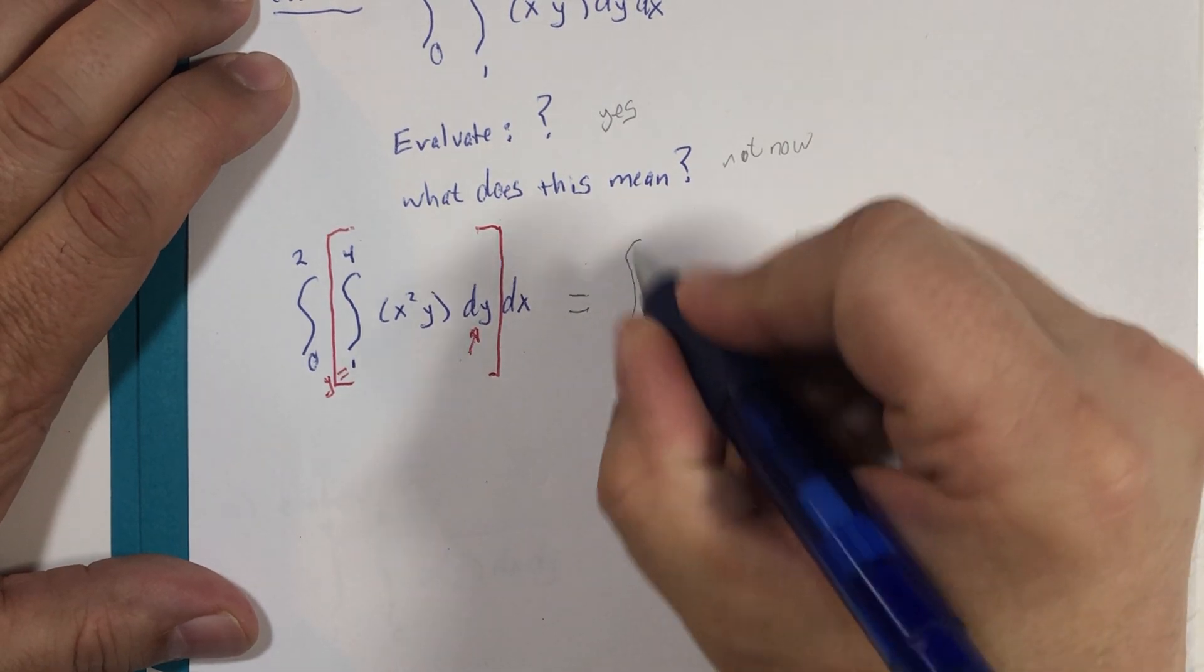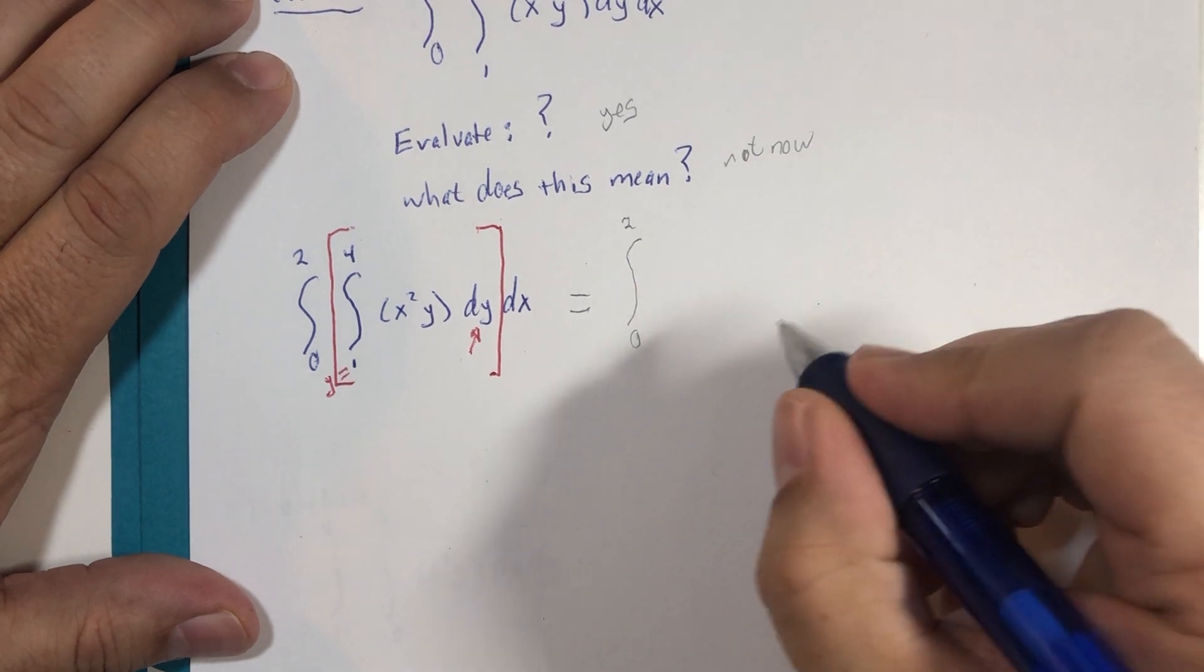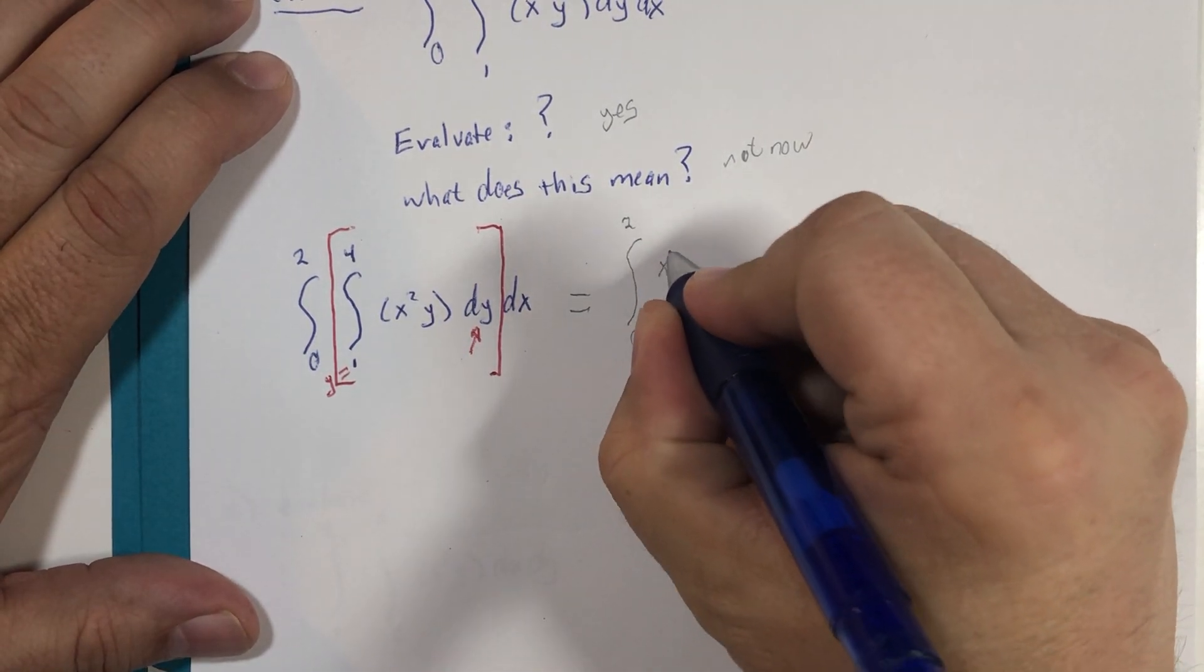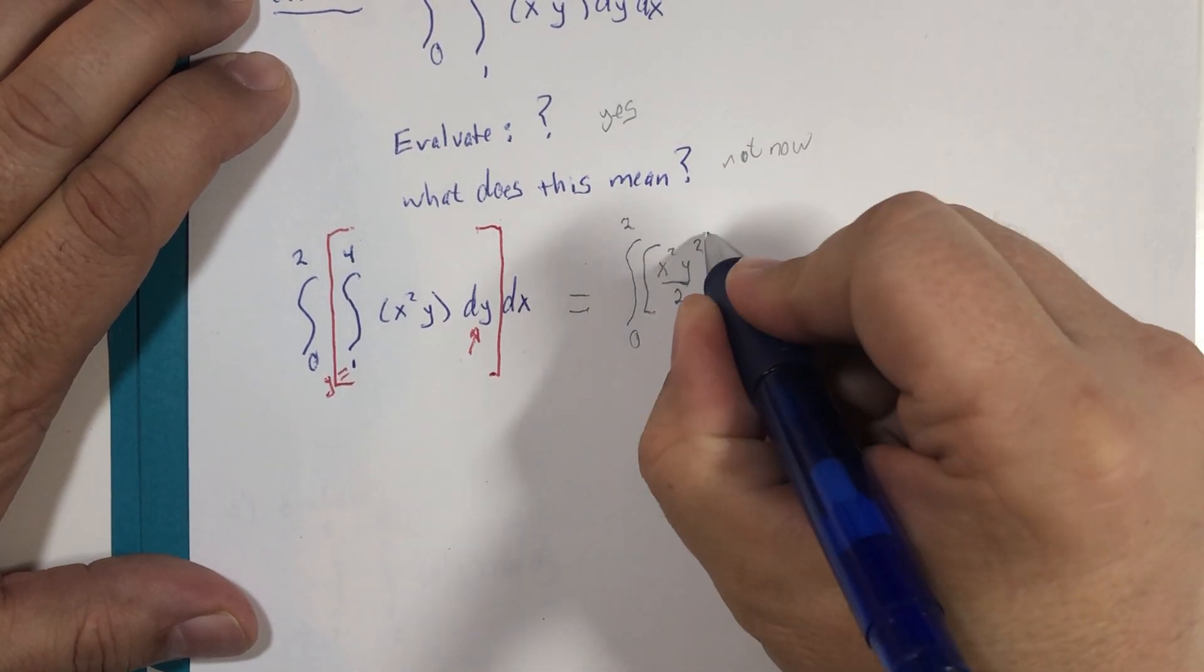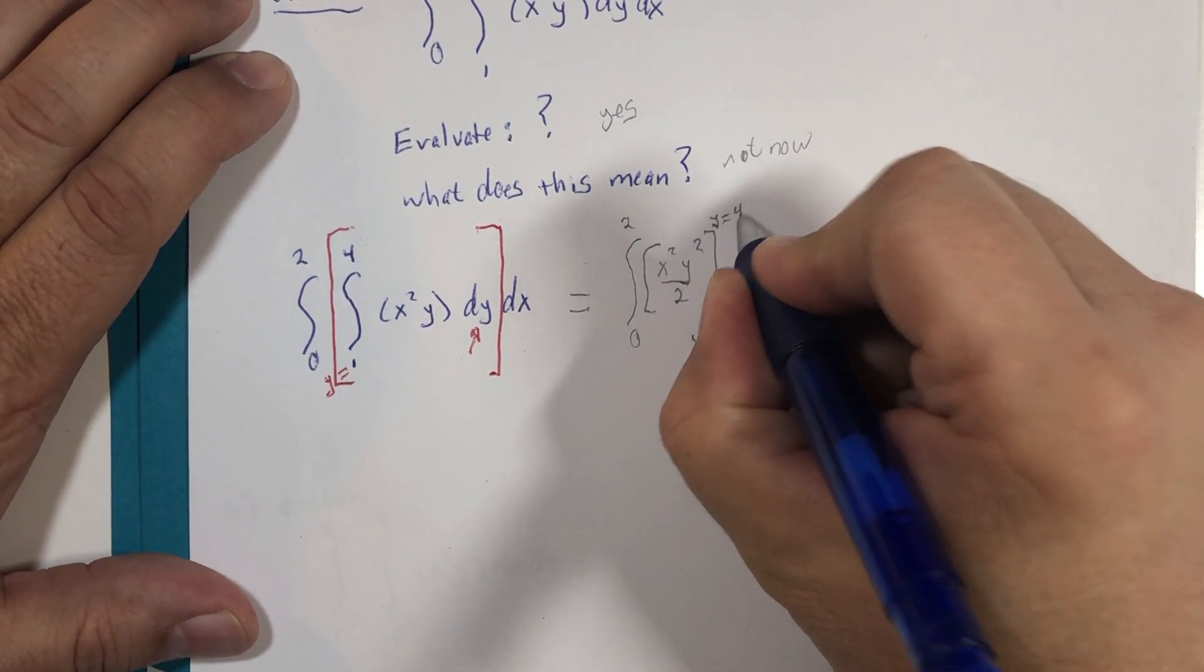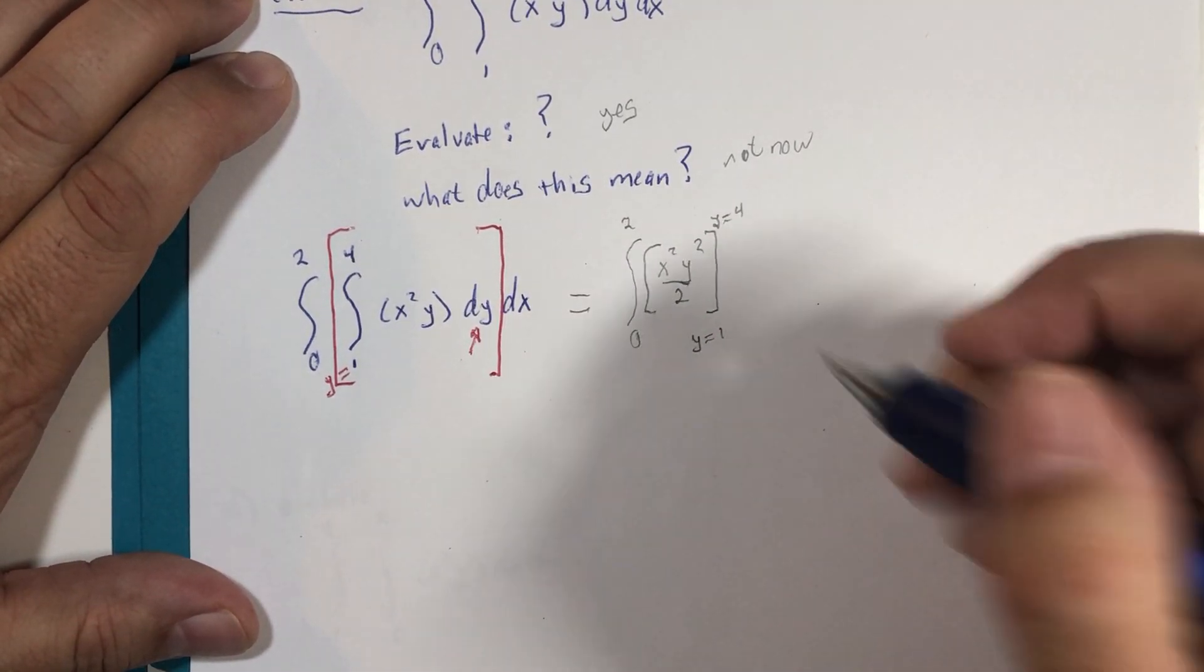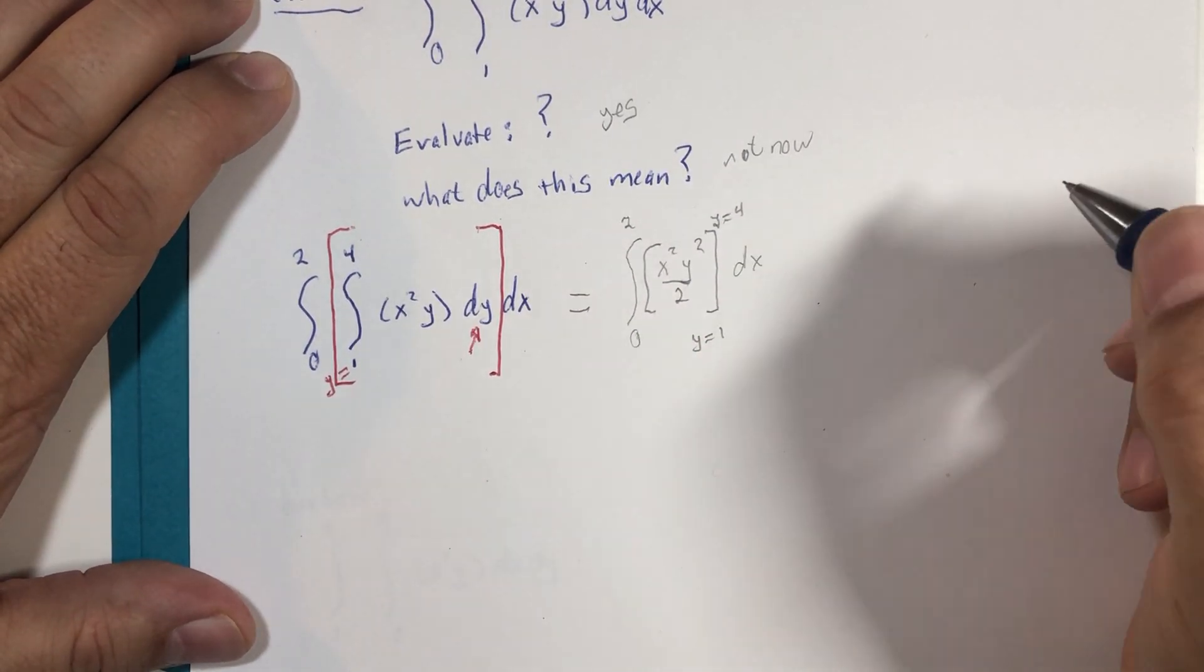So I'm going to ignore or hold off on the zero to two for a moment, and we'll put the dx in later. If y is the variable, this antiderivative is y squared divided by two. So you have x squared multiplied by y squared divided by two. And it's a definite integral where y is evaluated from one to four. And this is just a Western notation we use for definite integrals. And then later we'll come with respect to x.